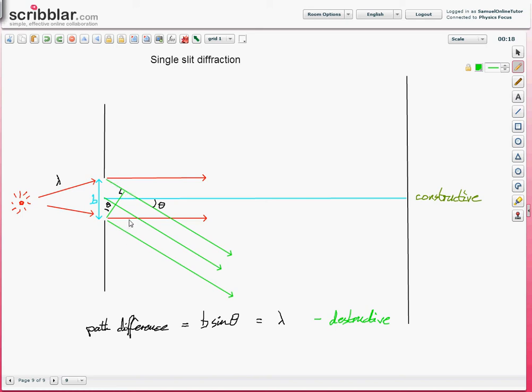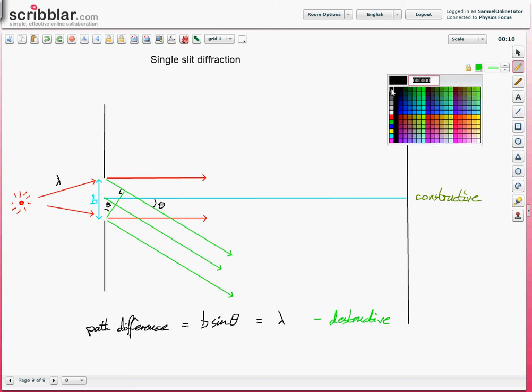In which case, everything cancels out in pairs from there to there, and then again from there to there. So, when this, B sine theta equals an integer number of wavelengths.